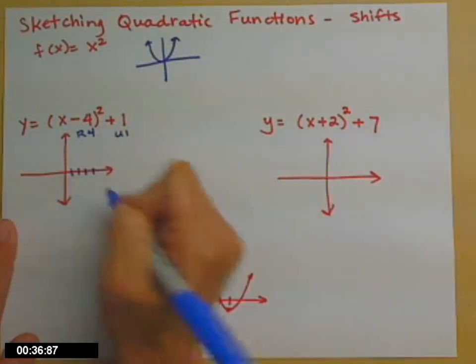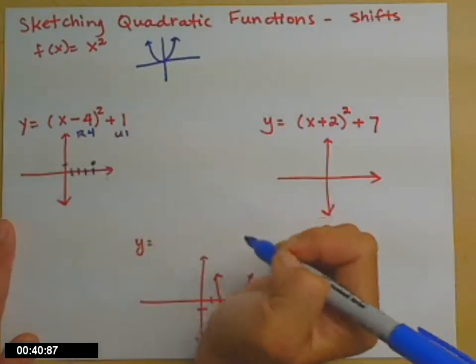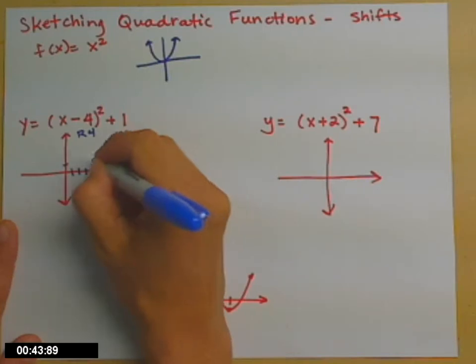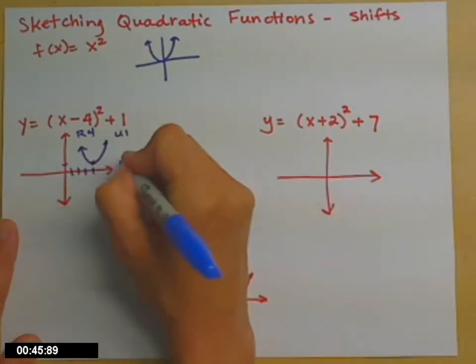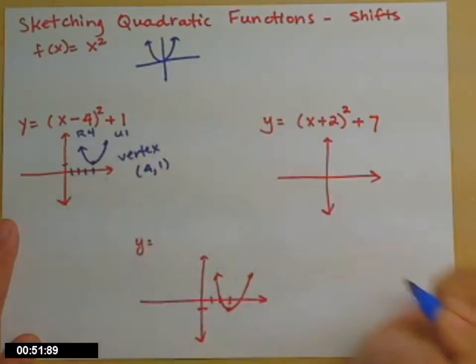So move right 4 from the origin, move up 1, and that gives you the place of your new vertex. And then you just sketch in a parabola. So the vertex is the point (4,1).